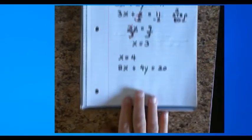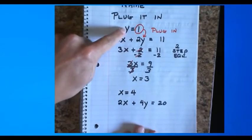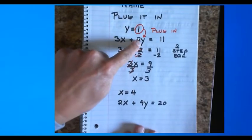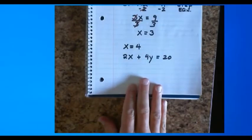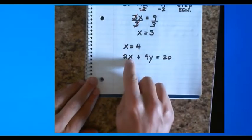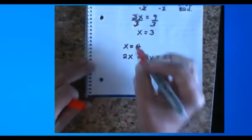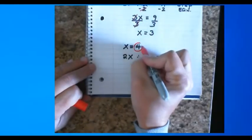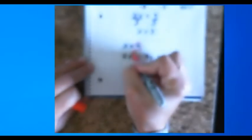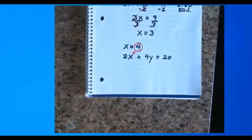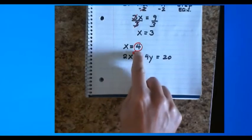And I'm going to plug that into 2x plus 4y equals 20. In the previous example, I gave you a y and you plugged it in for y. In this example, I'm giving you an x and you're gonna plug it in for x. So I'm going to do 2 times 4.